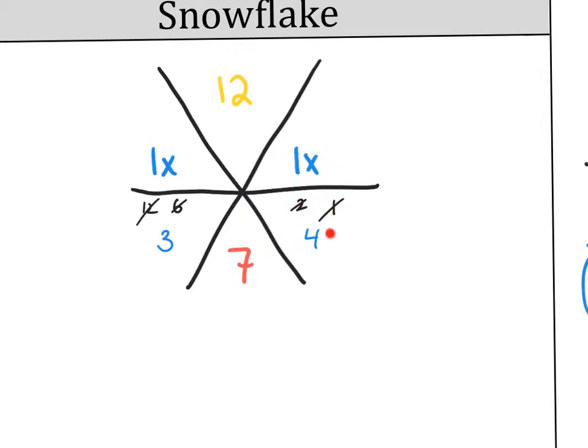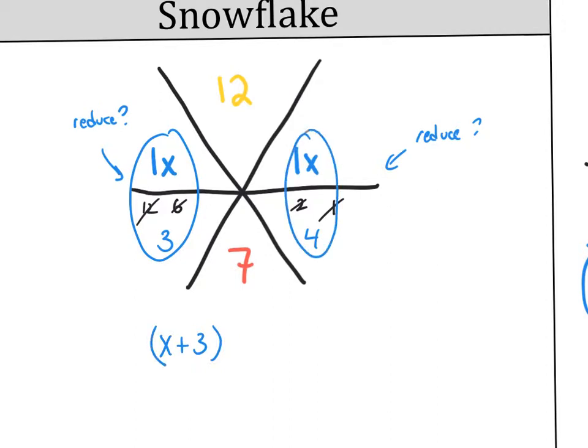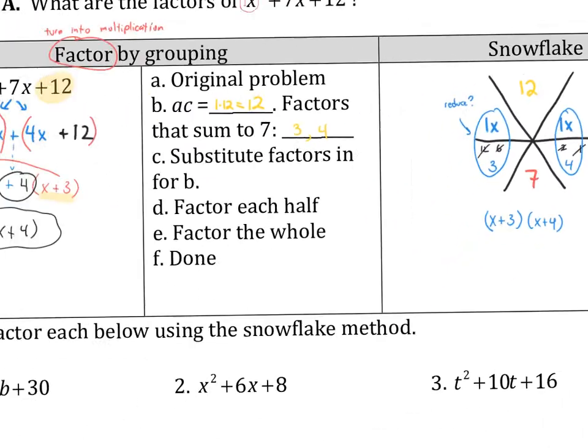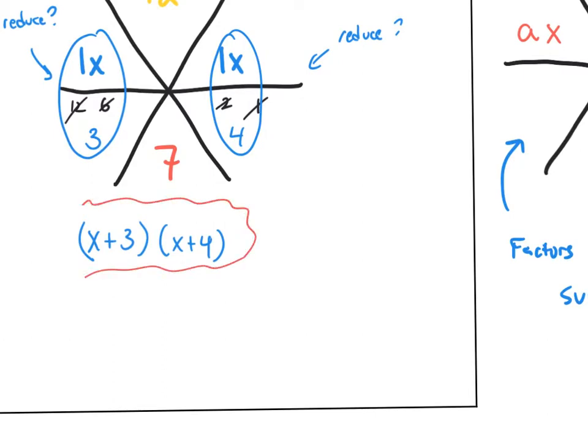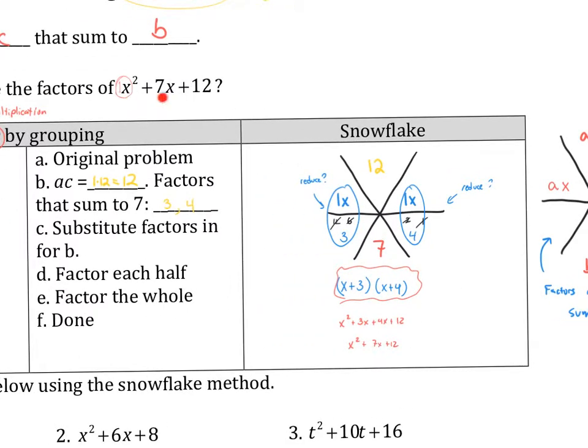The next thing we do is we check to see if there's anything here that can be reduced, like a fraction. Can this reduce? Can that reduce? In this case, the answer is no because the only common factor here is a 1. So here is one of my factors: x plus 3. And here's my other factor: x plus 4. And to do a quick double check, if I were to do double distribution, I get x squared plus 3x plus 4x plus 12. Those two combine in the middle to be 7x plus 12. And notice that's where we started: x squared plus 7x plus 12.